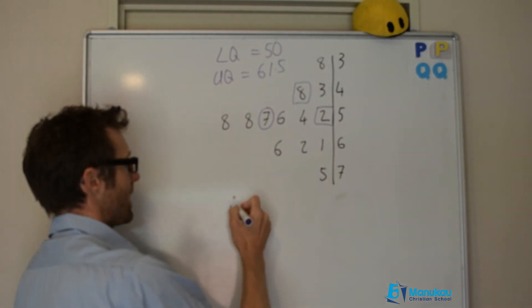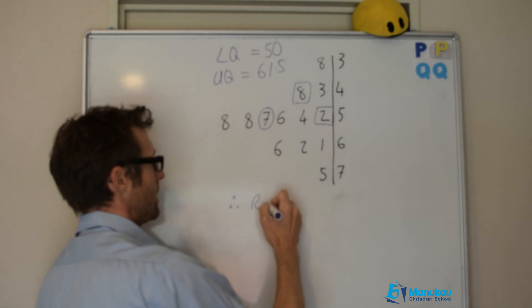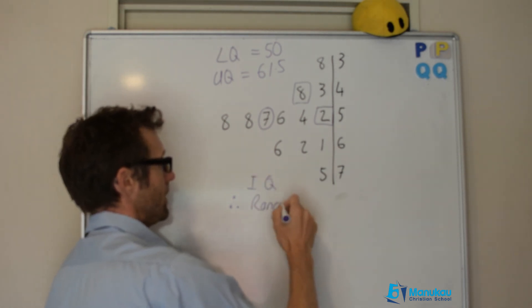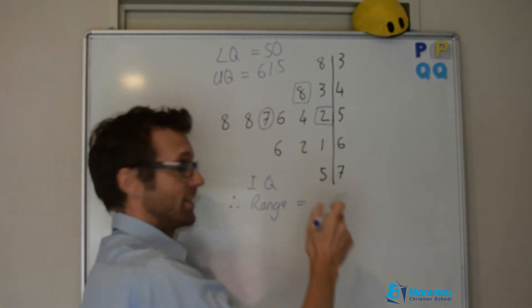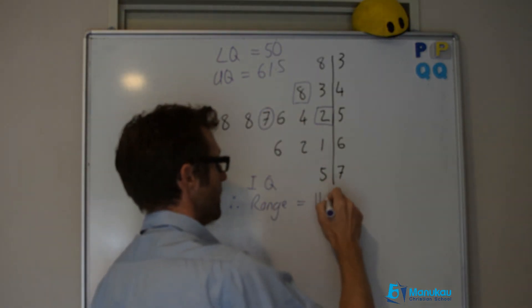Therefore we can say that our interquartile range is going to be equal to this minus this, which is 11.5.